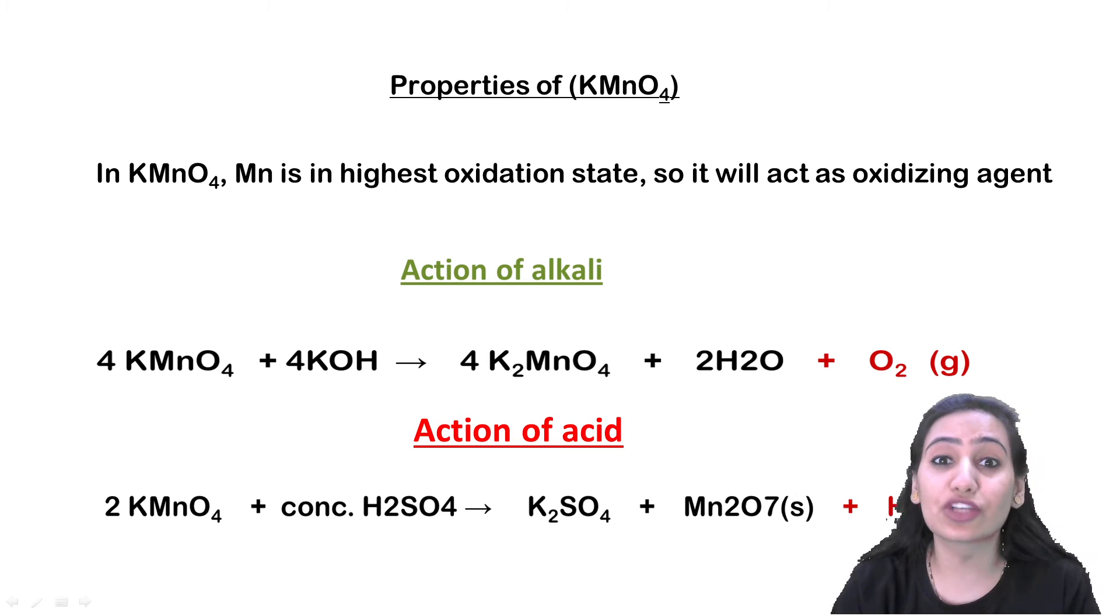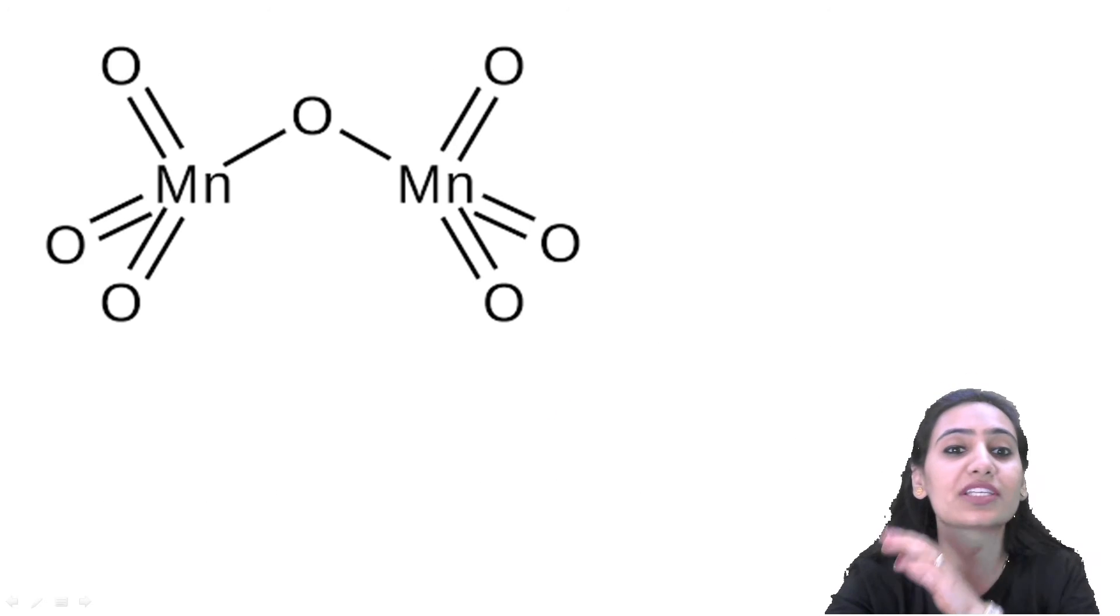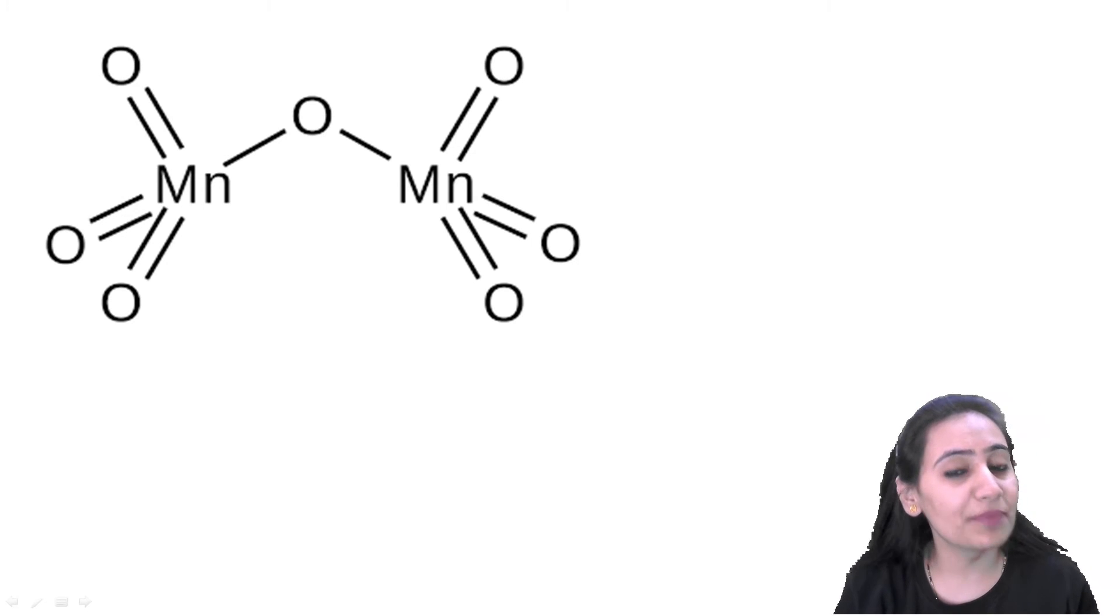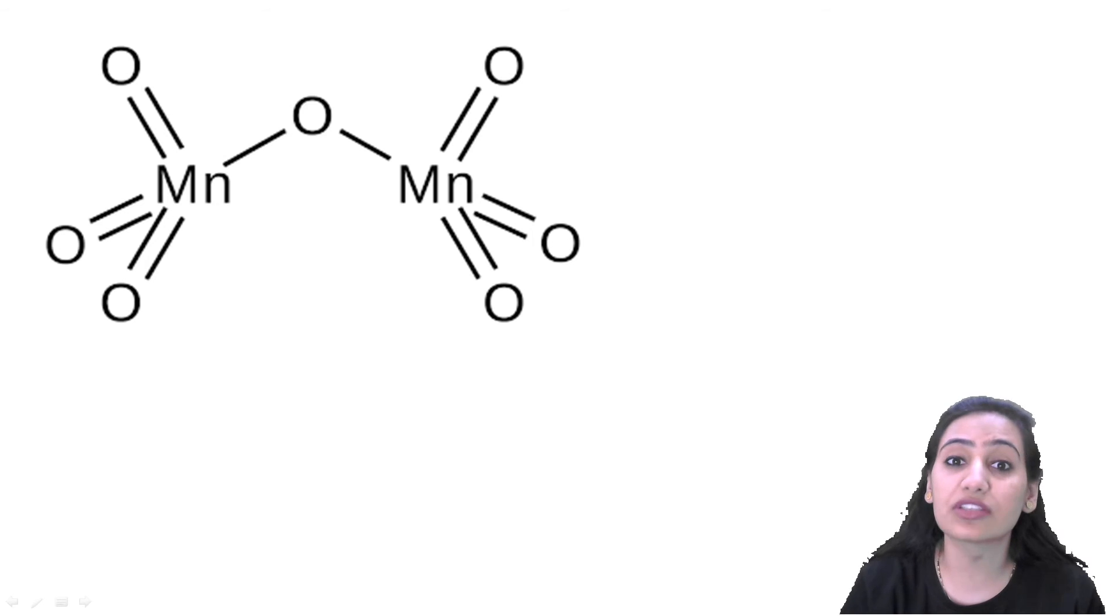This Mn2O7 compound is called manganese heptoxide. If we talk about its structure, this is the Mn2O7 structure. Here we can see manganese in the plus 7 oxidation state.